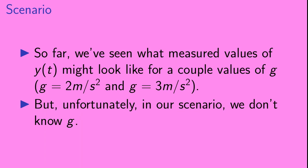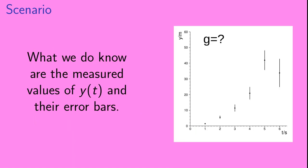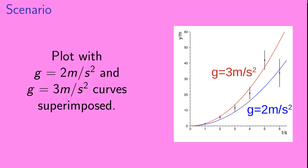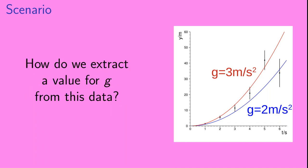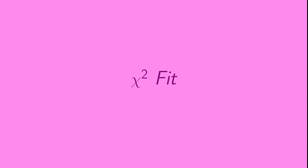Okay, so, so far, we've seen what measured values of y of t might look like for a couple different values of g. So we looked at the cases where g is equal to 2 meters per second squared and g is equal to 3 meters per second squared. But unfortunately, in our scenario, we don't know what g is. What we do know are the measured values of y of t and their error bars. Here we show those data points with the curves for g equals 2 meters per second squared and g equals 3 meters per second squared superimposed. By eye, it looks like g is probably somewhere between 2 and 3 meters per second squared. But how do we extract a value for g from this data? That brings us to the idea of a chi-squared fit.